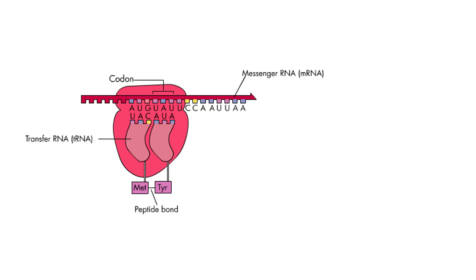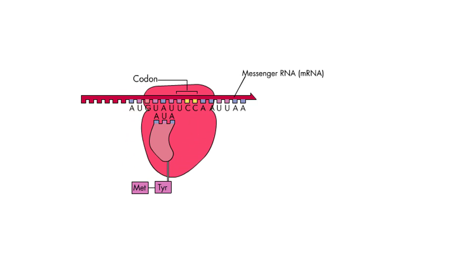The bond between the first tRNA and methionine breaks, and the first tRNA is ejected from the ribosome without its amino acid. The ribosome now shifts ahead by one codon's length on the mRNA.